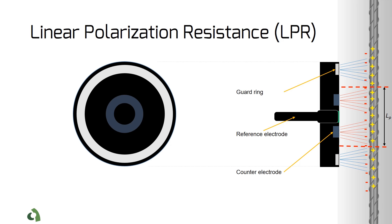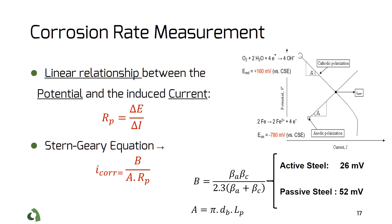Using the Stern-Geary equation, one can measure the corrosion rate. In this equation, the B is a Stern-Geary constant, and can be determined numerically by knowing the anodic and cathodic Tafel coefficients or experimentally by measuring the mass loss. The other important parameter is the polarized area.